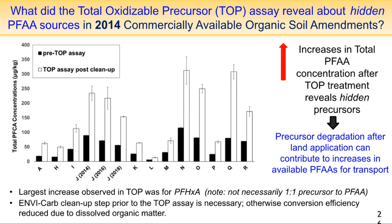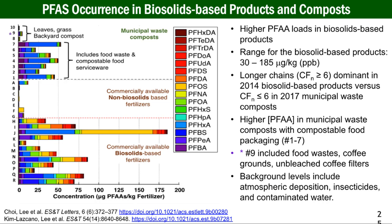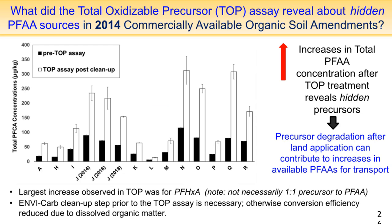We talked about those 17 acids, but there are several thousand PFAS. One easy way to look at the broader picture is the total oxidizable precursor assay — using persulfate at heated temperatures and high pH to get precursors, anything that leads to these acids, to break down to acids that we can measure. What you see here for these different fertilizers is the black bar is the sum of the carboxylic acids, and the white bar is what we saw increase when we did this TOP assay. That tells you there's a lot of hidden precursors present that we're not seeing — and that's somewhat comparable to what can happen under microbial degradation in active systems.